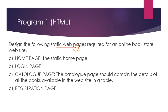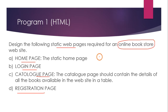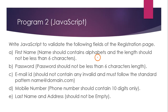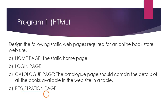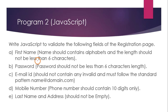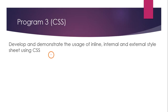Now for the syllabus: the first program asks us to create four static web pages — a home page, login page, registration page, and catalog page — for a website called an online bookstore. The second program uses JavaScript to validate data entered in the registration page, for example ensuring last name and address fields are not empty; if left empty, an error message should be shown.